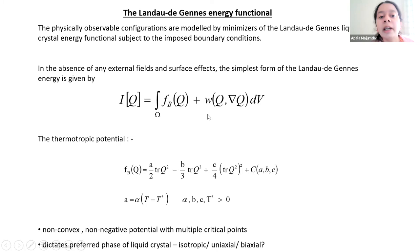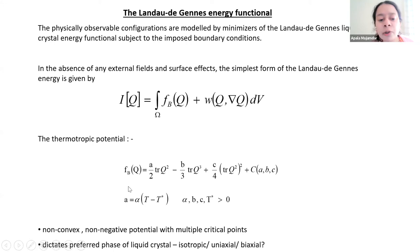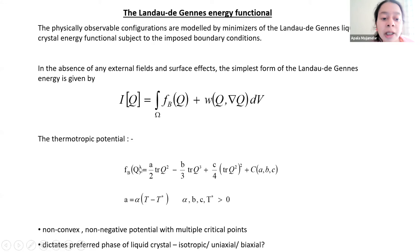The Landau-de Gennes theory is a variational theory with an associated free energy. I work most of the time with the simplest kind, where there are no external fields and I have Dirichlet boundary conditions, so there are no surface energies either. The free energy has just two contributions. The first is the bulk potential — a degree-four polynomial in the eigenvalues of the Q-tensor. The parameters B and C are fixed material-dependent constants, and A is a rescaled temperature. The purpose of the bulk potential is to drive ordering transitions in spatially homogeneous samples as a function of temperature.